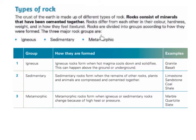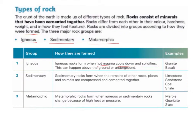The three major rock groups are igneous, sedimentary and metamorphic. Igneous rocks form when hot magma cools down and solidifies. This can happen above the ground or underground. Two examples of igneous rocks are granite and basalt.